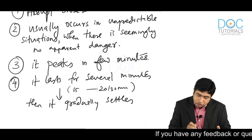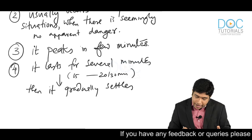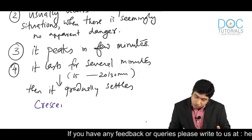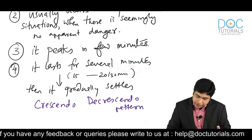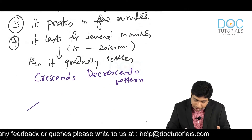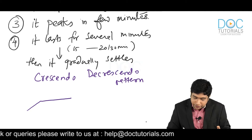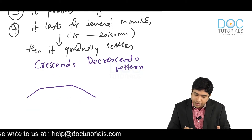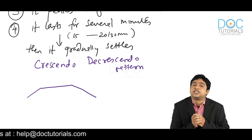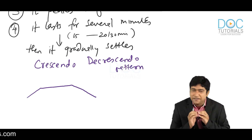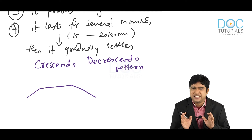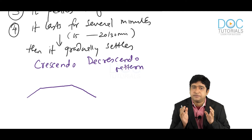This is known as a crescendo-decrescendo pattern. During that period, the subject will be having intense suffering. Those few minutes to 20 or 30 minutes will be a period of intense suffering.